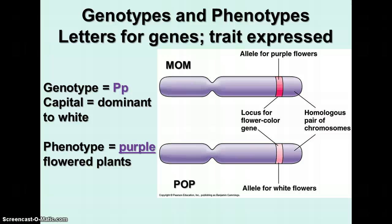We'll talk about genotypes and phenotypes. Genotypes are the letters that stand for the genes — the alleles. Phenotypes are the trait that is expressed; we often think of it as a physical trait. In this case, with this set of homologous chromosomes in a particular offspring, we have a genotype that has one capital P and one lowercase p — big P and little p. Remember, the capital letter represents the dominant allele. By convention, when writing this, you always put the dominant allele first, regardless of which direction you're going when doing your Punnett square.